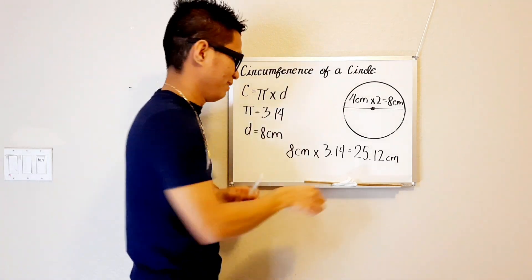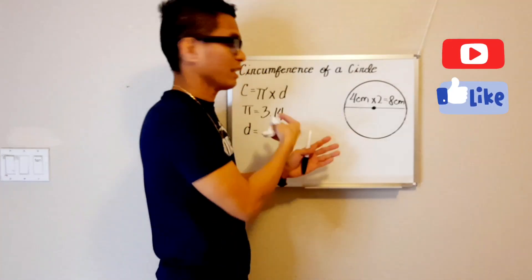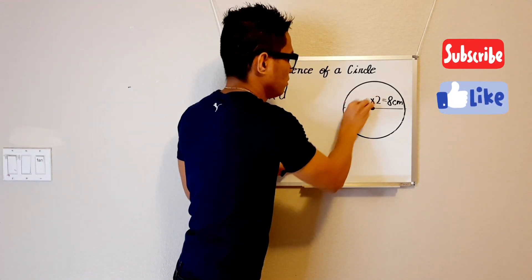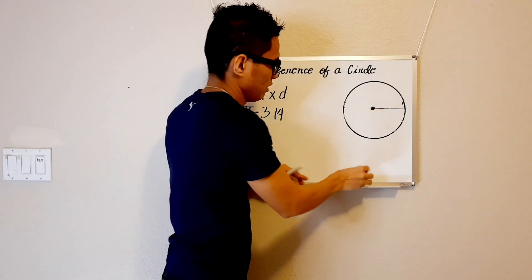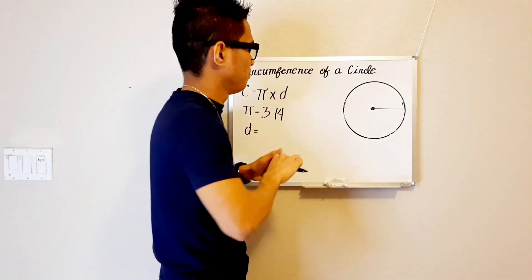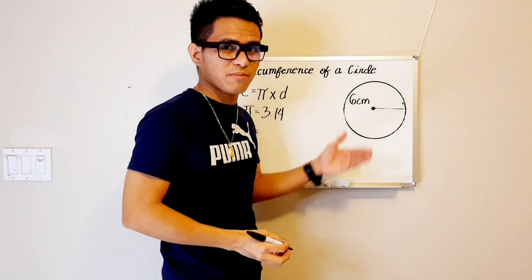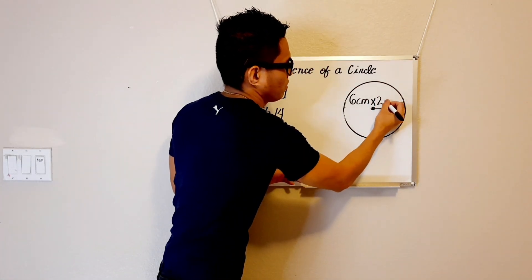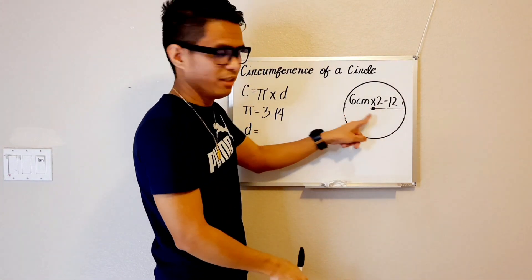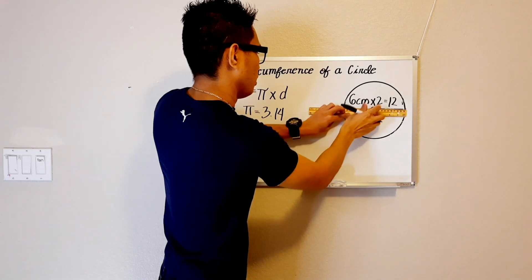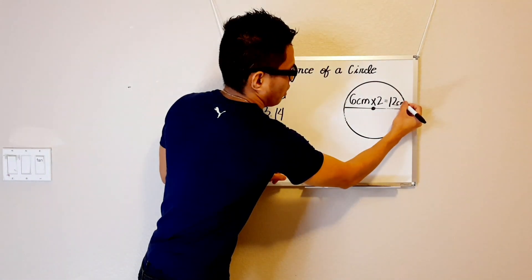Now let me give another example. We're gonna use the same formula as well. Let's say that our radius is 6 cm. And we're gonna multiply this 6 cm by 2. So 6 cm times 2 equals 12 cm. And we're gonna make a line from here to here. And that's what we call diameter.